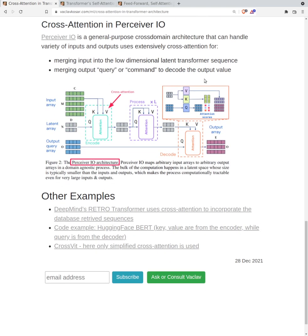Cross attention already existed in the decoder. It's extensively used in Perceiver IO, Perceiver, or hierarchical Perceiver IO, which is a general purpose cross-domain architecture that can handle a variety of inputs and outputs. It uses cross attention for merging inputs - you merge all the different inputs into the latent sequence where the latent sequence is low dimensionality so you can afford to calculate cross attention multiple times.